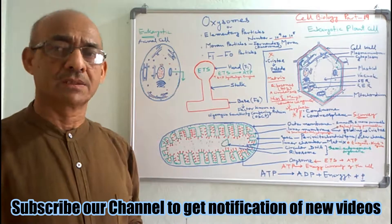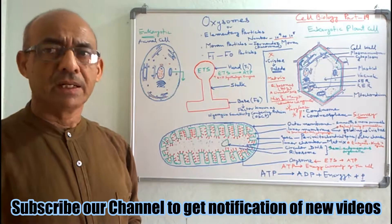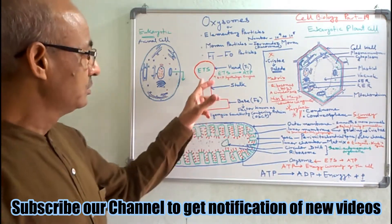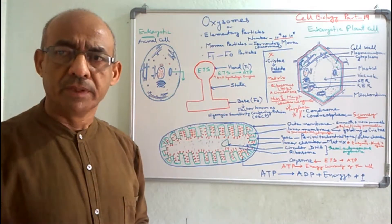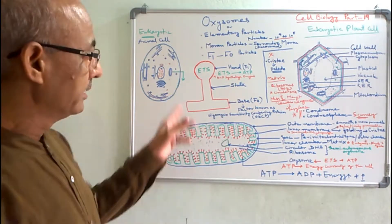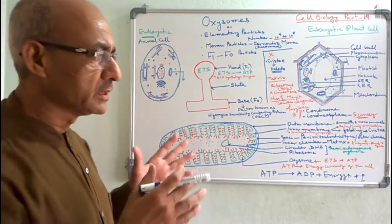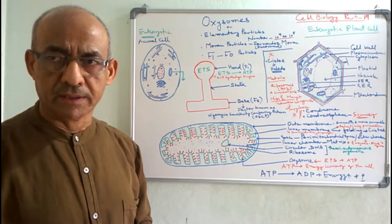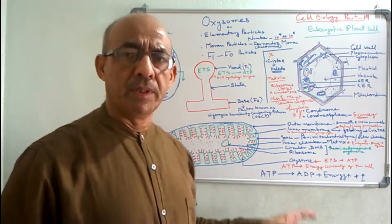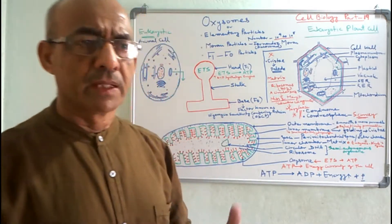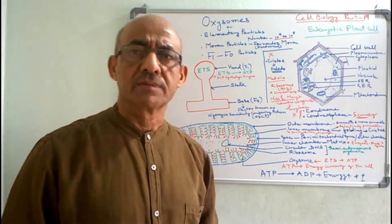Now we will discuss why mitochondria are called as powerhouse. In the head part of all the oxysomes, energy in the form of ATP is produced and stored. Whenever the cell or the entire body of the organism requires energy, those ATP are converted into ADP — adenosine diphosphate — and a tremendous amount of energy is released as per the requirement of the body. So ATP serves as an energy currency of the cell.